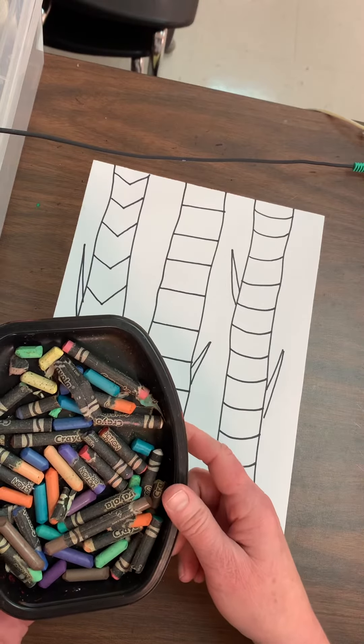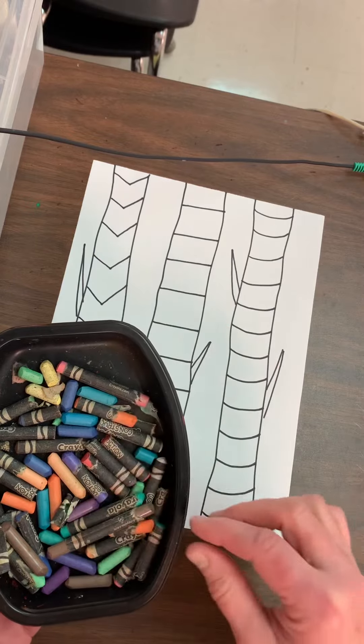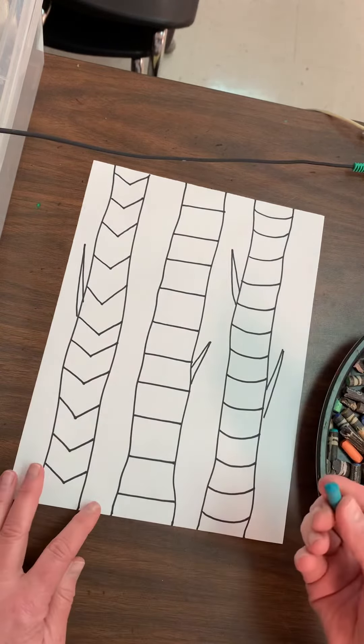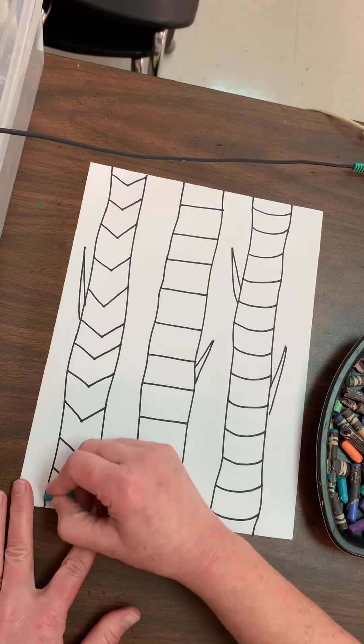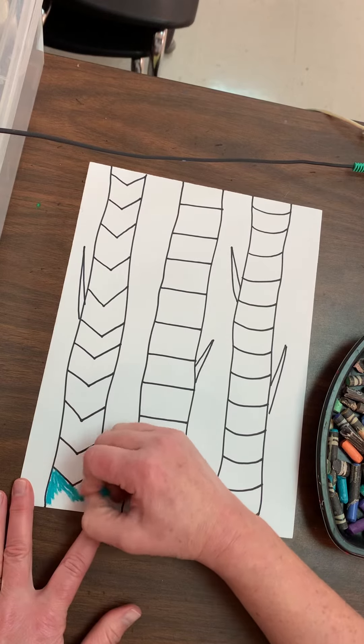...called construction paper crayons. You're going to be sharing with people at your table. What we're going to do first is pick up one color, so you're going to choose a color out of there. Let's say we start with the one on the left. I'm going to color my first space with that...